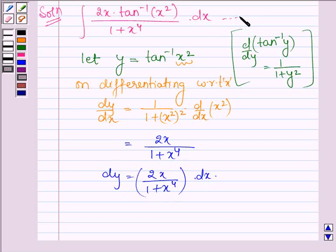Let us denote the given integral by 1. So 1 with the help of dy and y can further be written as integral 2x divided by 1 plus x raised to the power 4 into dx contributes to dy and tan inverse x square is y.